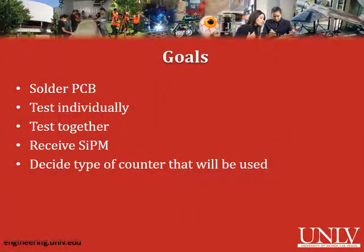Over the winter break we plan to solder the components for the TIA and ADC PCBs and test them individually as well as together to get them ready for demonstration at the beginning of next semester. When the silicon photomultiplier arrives, we will do basic experiments to verify its functionality. We will also make use of a temporary counter with an Arduino and LCD for testing purposes until we choose and design the counter for our final product. This will give us a basic working version early next semester that we will then work on calibrating and improving.